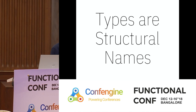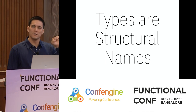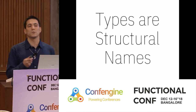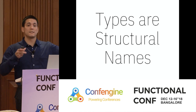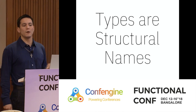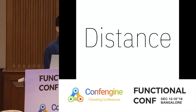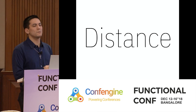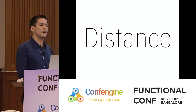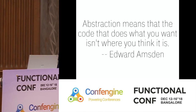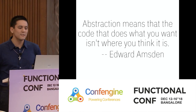Types are a type of structural name - a summary or condensation of a broader idea that communicates information to identify a piece of what we're working with. When we introduce names, we increase the distance metrics in our code: both semantic distance through abstractive indirection and syntactic distance through the actual introduction of syntactic elements. Edward Amsden - Haskeller, FP peer, user of Idris at one time, colleague from IU - had this to say: 'Abstraction means that the code that does what you want isn't where you think it is.'